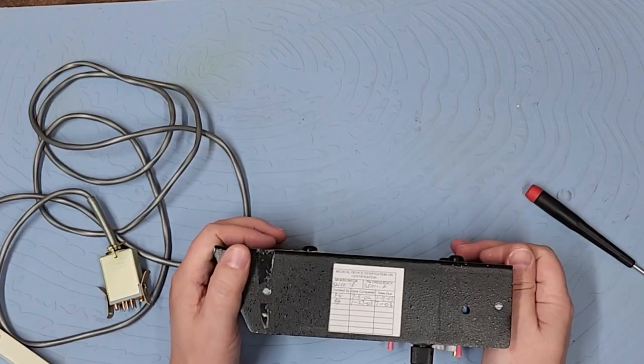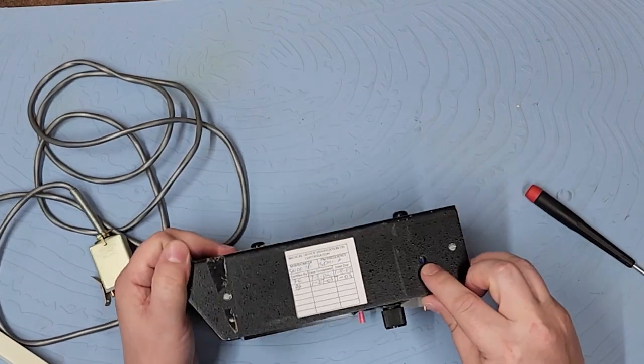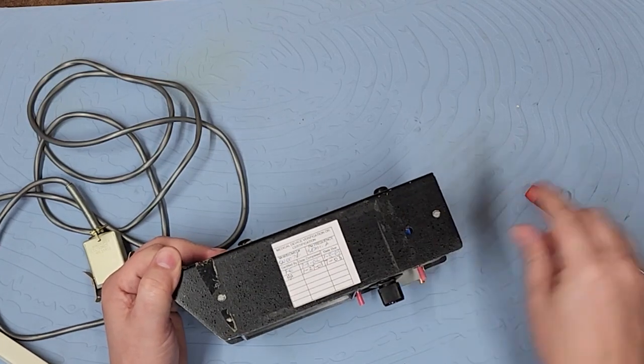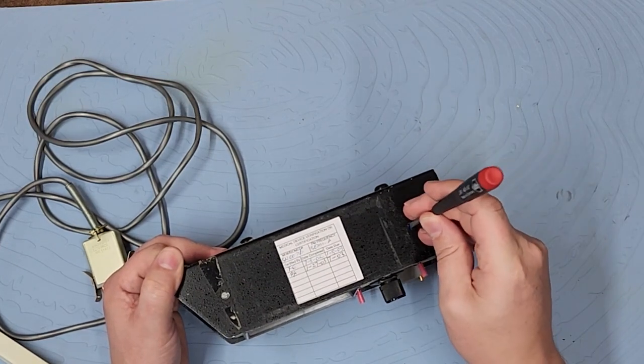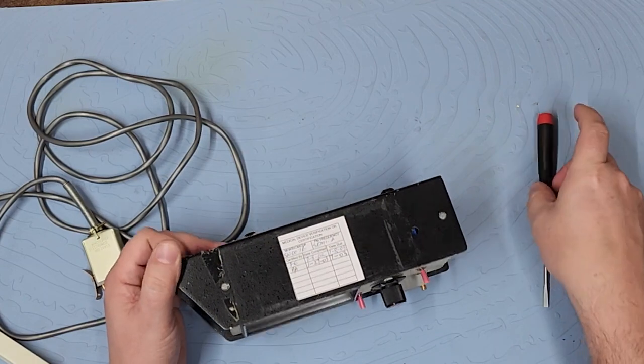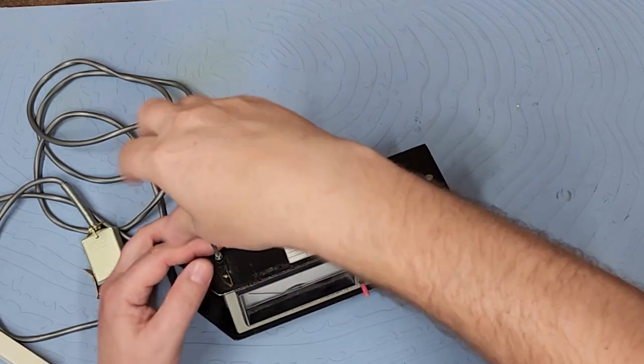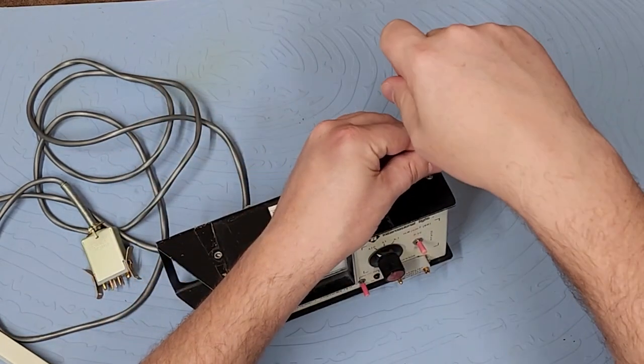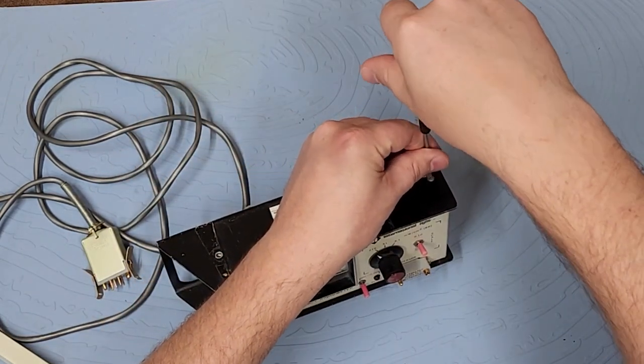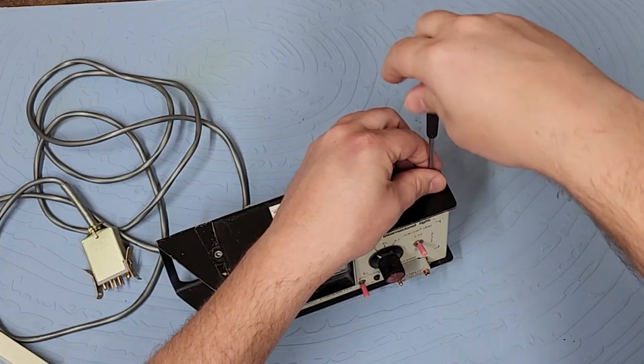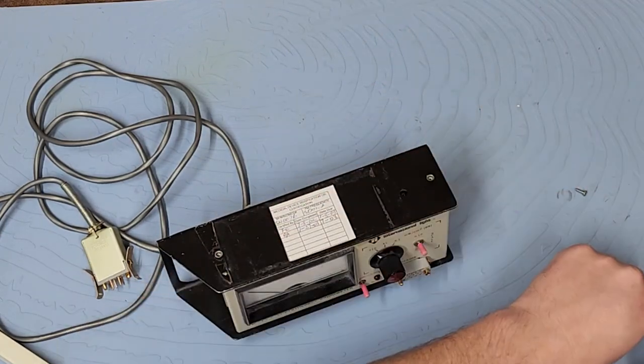I have one little potentiometer right here with a little access port where I can adjust it. I don't know if that's for zeroing or for self-calibration. But you know the story - if I've got a vintage piece of equipment here, let's tear it apart.